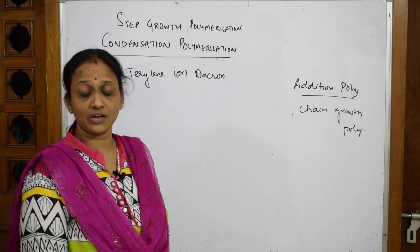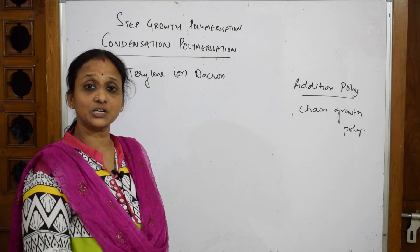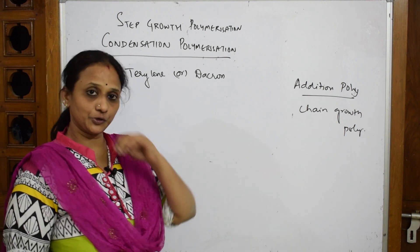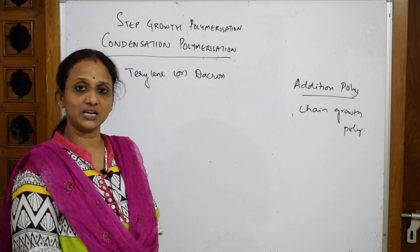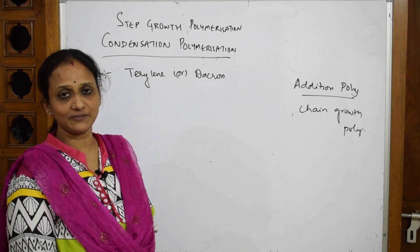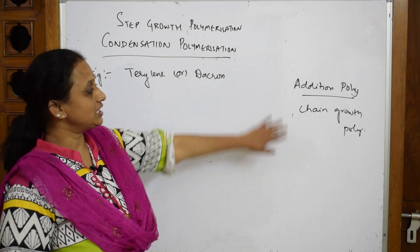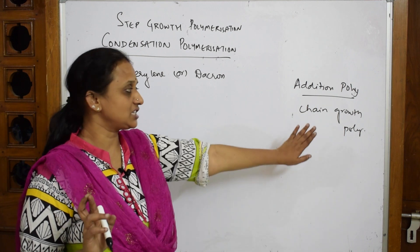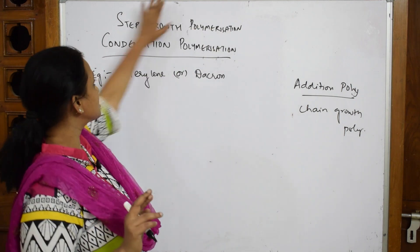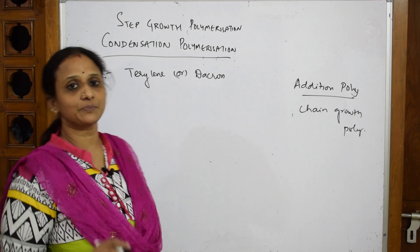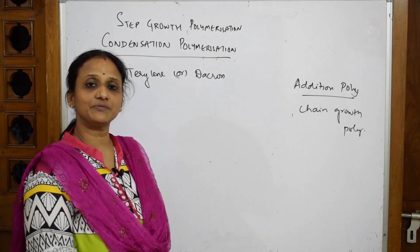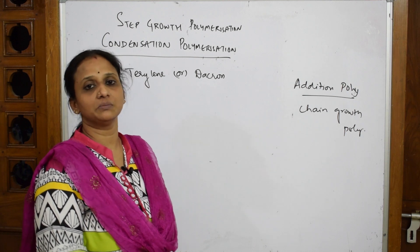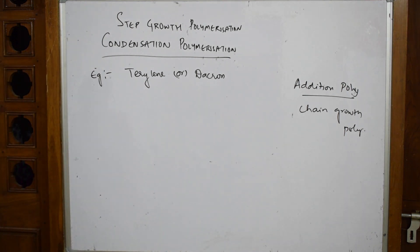I've already covered condensation polymerization in another video, including preparation of Terylene/Dacron, Buna-S, and Buna-N - please go through that video for a clear explanation. In the exam: addition polymerization = chain growth polymerization; condensation polymerization = step growth polymerization. Now let's finish the chapter with differences between copolymer and homopolymer.